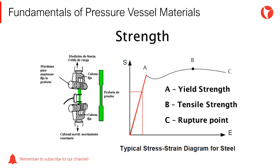When this point is exceeded, the material is no longer elastic. Releasing the load in this range leaves the specimen with a permanent or plastic deformation. Point B is known as tensile stress and Point C is known as the rupture point.